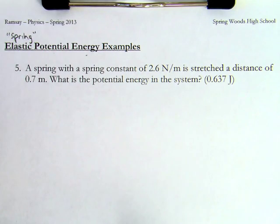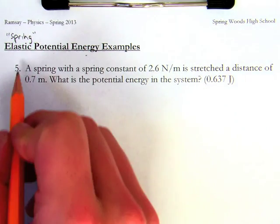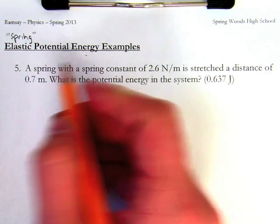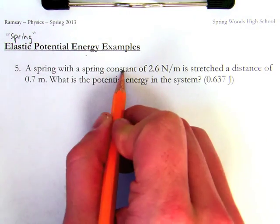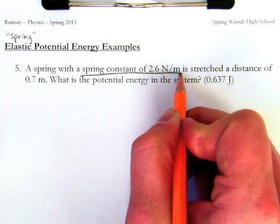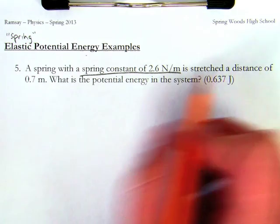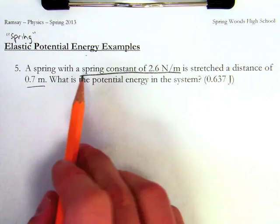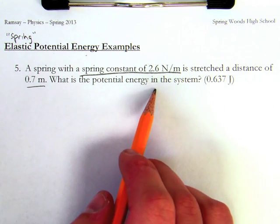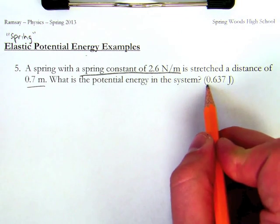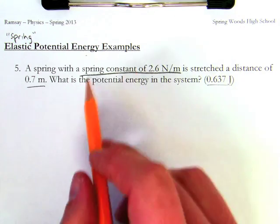So number five, let's read together. A spring with a spring constant of 2.6 newtons per meter is stretched a distance of 0.7 meters. What's the potential energy in the system? Well, here's my answer, so let's see if I can show my work and actually get that answer to make sure I understand the concept.